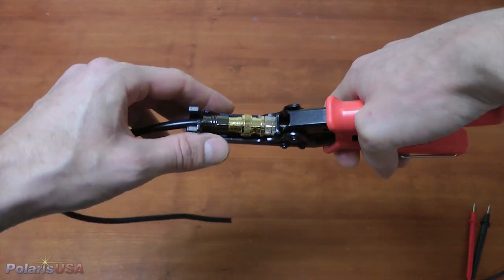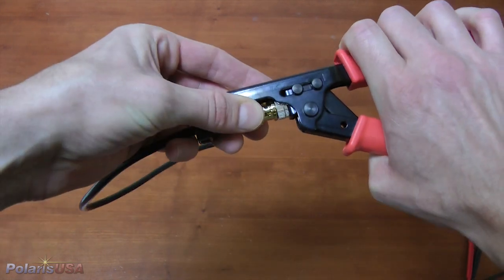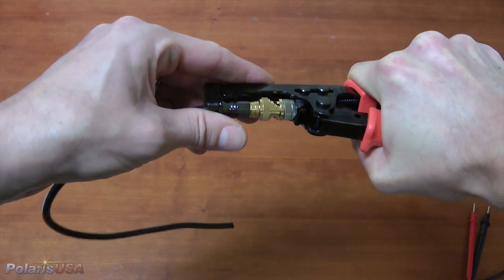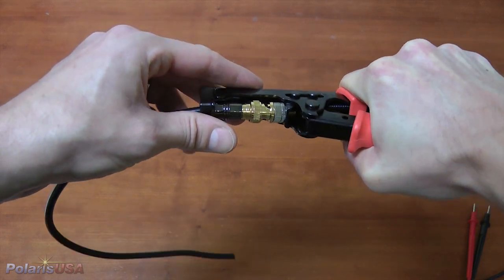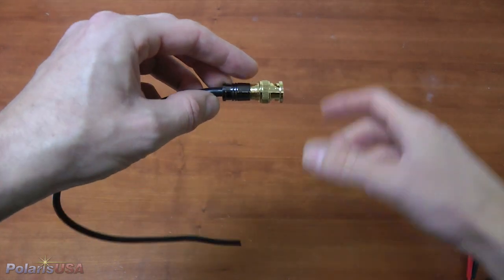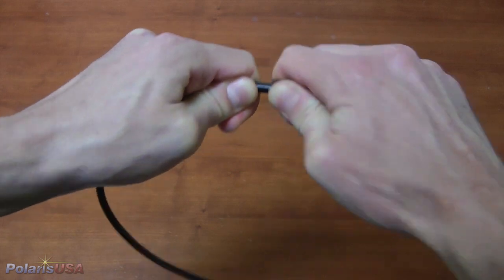To compress, I am simply going to insert the connector into the tool and lock it in place. Then simply compress the connector until it stops. If done properly, I should now have a very strong connection that cannot be removed with considerable force.